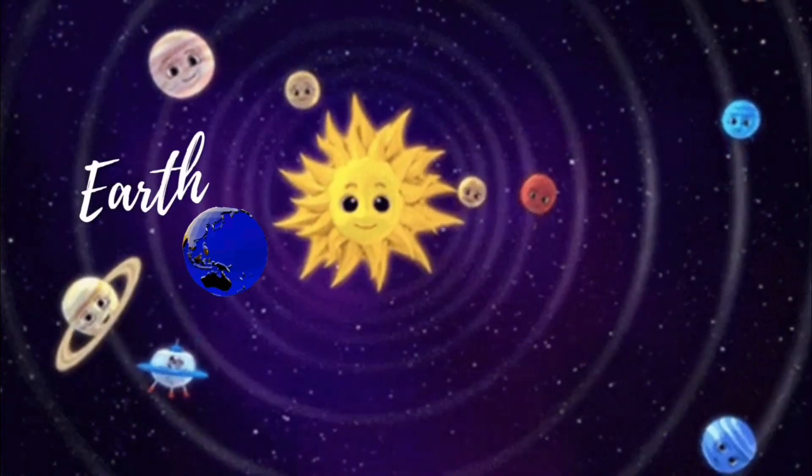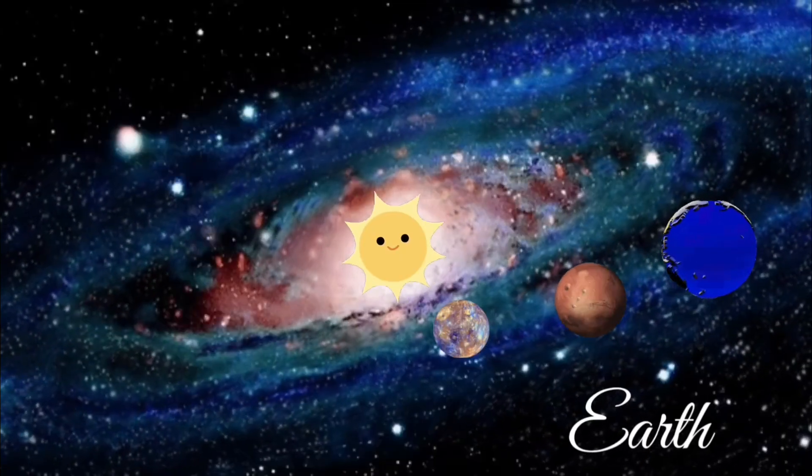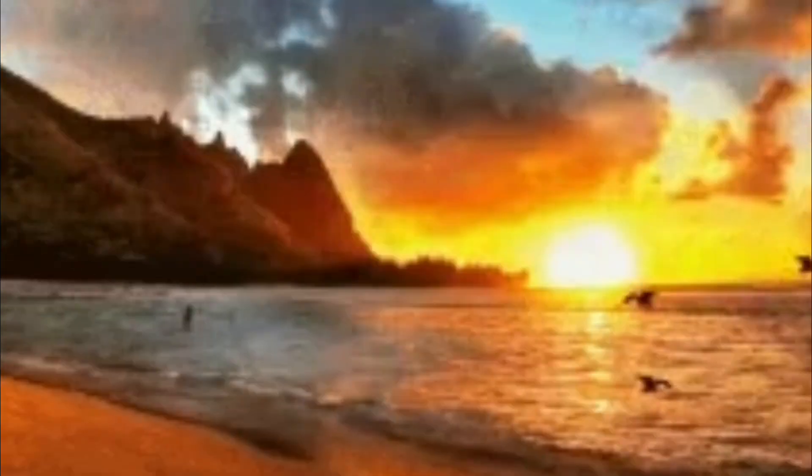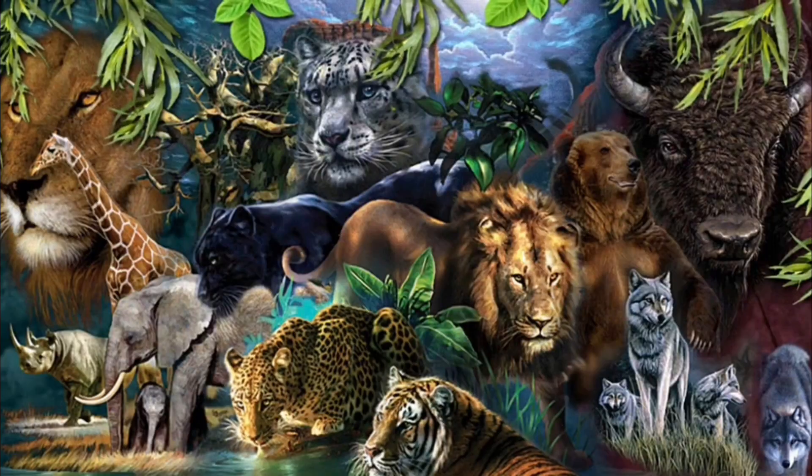Earth has just the right air, water, and temperature for humans to live. We have oceans, mountains, and lots of different animals and plants.